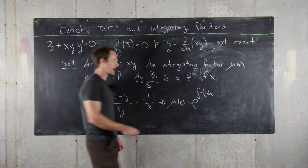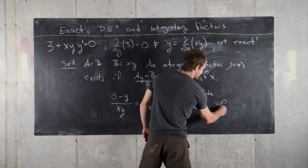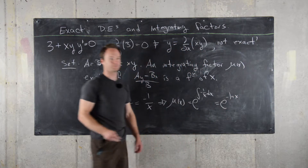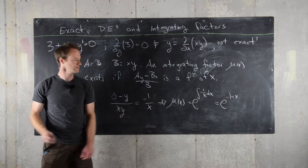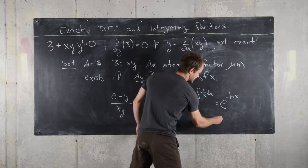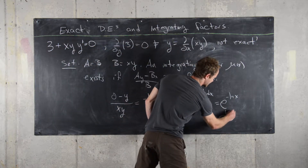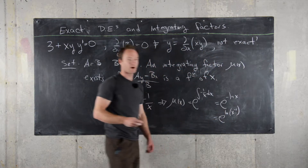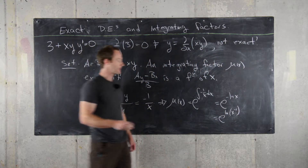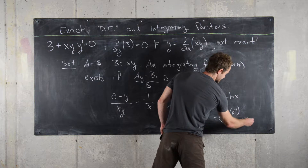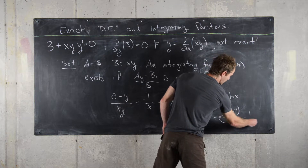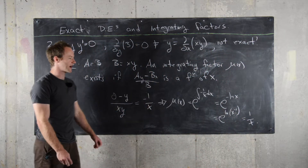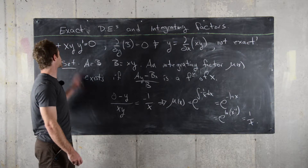So let's look at what that is. This is the exponential of negative natural log of x, which is the exponential of the natural log of x to the negative 1, and finally this is 1 over x. So an integrating factor of 1 over x exists.